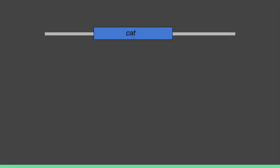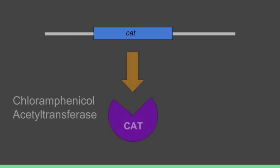In this video, we will focus on a widely used reporter gene that produces the enzyme called chloramphenicol acetyltransferase, or CAT.